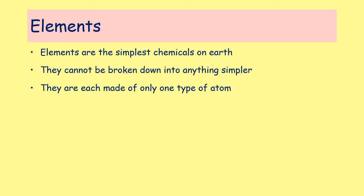Elements are the simplest type of chemical on Earth, and what that means is that they cannot be broken down into anything more simple. If you imagine a piece of paper as being an element — if you rip up that piece of paper and keep tearing it up, each small bit you end up with is still a piece of paper. That's what we mean by an element: you can break it down into smaller pieces, but every single piece is still the same thing. There's nothing you can break it down into that is simpler.